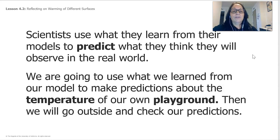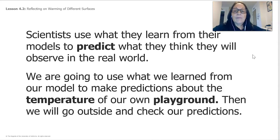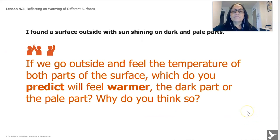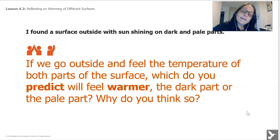Then we will go outside and check our predictions. Since we're not in school, when I'm done with this lesson I want you to take an adult with you and go outside to make those predictions. You could do it in the afternoon when an adult comes home — I don't want you going out by yourself. You're going to find a surface outside with the sun shining on dark and pale parts, feel the temperature of both, and predict which will feel warmer — the dark part or the pale part — and think about why.